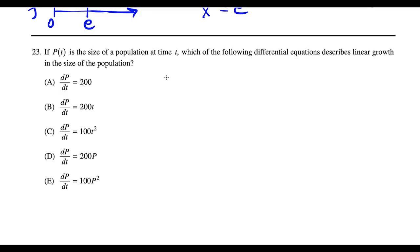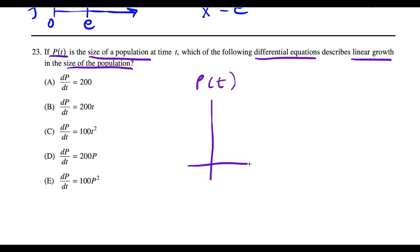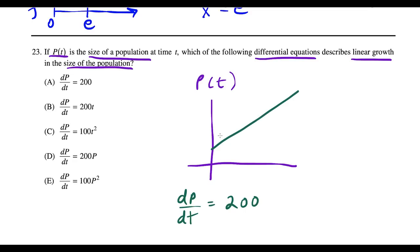Question twenty-three: which differential equation describes linear growth in population p(t)? If p(t) is linear, then dp/dt is a constant. So the differential equation should have dp/dt equal to a constant, which is choice A.